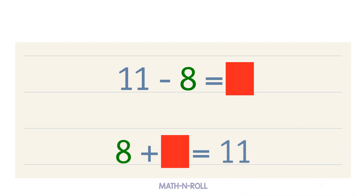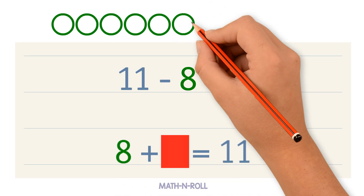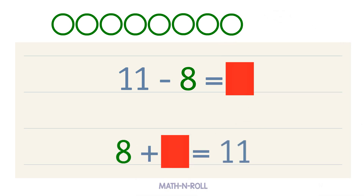Use a model to solve. We have 8 circles. How many more circles do we need to make 11? We need 3 more circles. So 8 plus 3 equals 11. 3 is our blank. So 11 minus 8 equals 3.